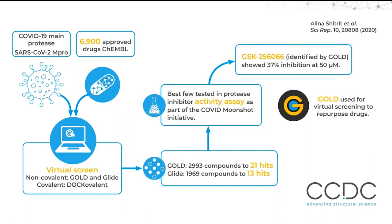To provide an example of how GOLD works, here is a recent publication from Tel Aviv University where a virtual screen identified potential drugs to repurpose against COVID-19. The Campbell database of drugs at various stages of clinical trials was filtered and the resulting library screened in silico using non-covalent and covalent methods. GOLD was used in non-covalent virtual screening and identified 21 hits. The lead compounds went on to be tested by protease inhibitor activity assay as part of the COVID Moonshot Initiative, and this found one compound — a molecule in phase two for treatment of COPD identified by GOLD — showing 37% inhibition at a 50 micromolar concentration.